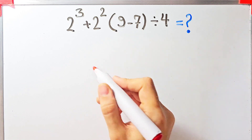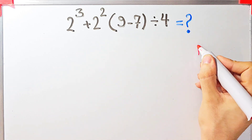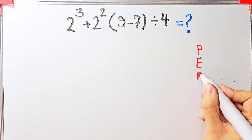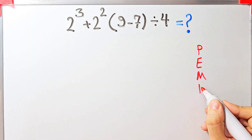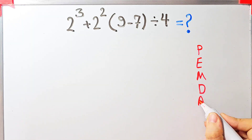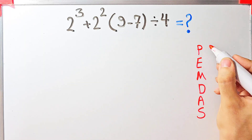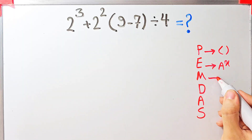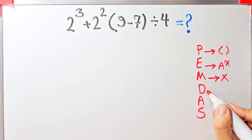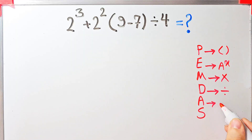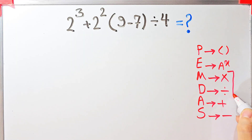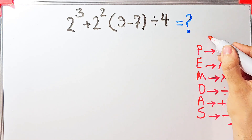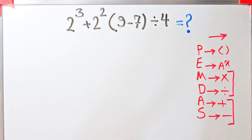To solve this question we need to follow the PEMDAS rule. PEMDAS shows the priority of mathematical operations — if you don't follow it, you get the wrong answer. P stands for Parentheses, E for Exponent, M for Multiplication, D for Division, A for Addition, and S for Subtraction. Multiplication and division have the same priority level, as do addition and subtraction — when both appear, we work from left to right.